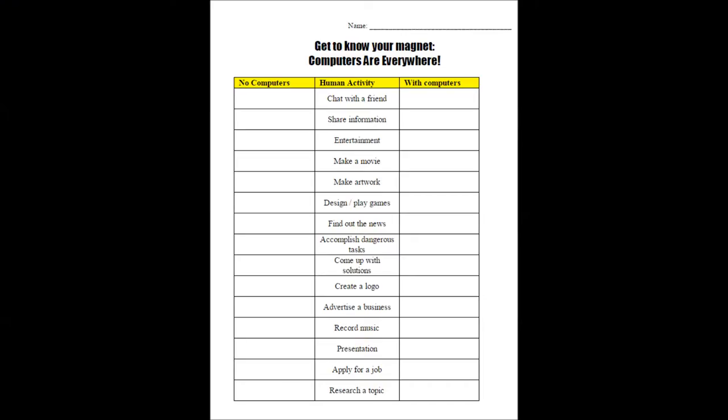Your first activity is looking for computers everywhere. You're going to get a paper from your teacher that looks like this, a half sheet. It's got activities listed down the middle—human activities that are all common things you might do or know about. On one side is how you would do this activity with no computers, and on the other side, how you would do it with computers.